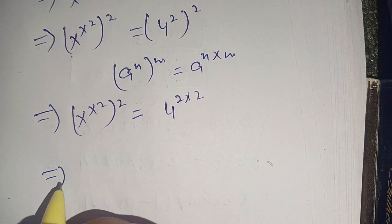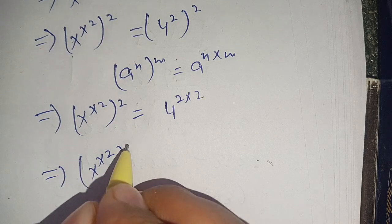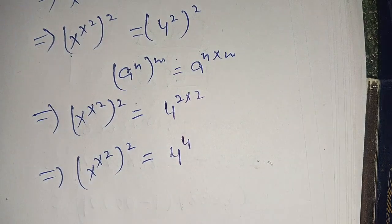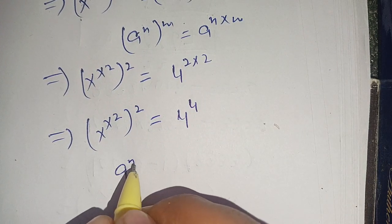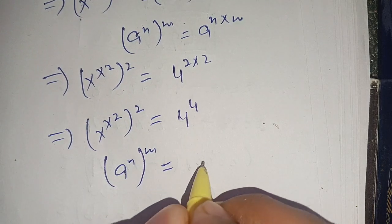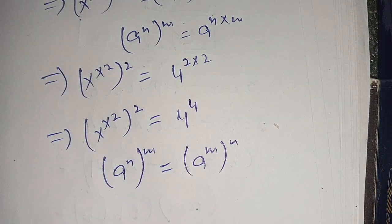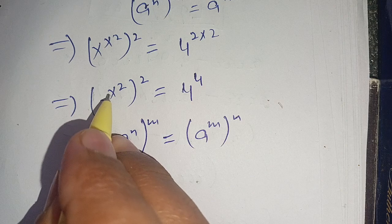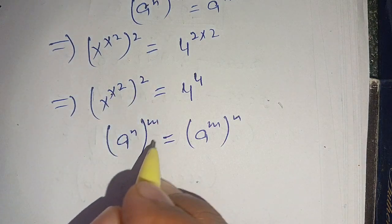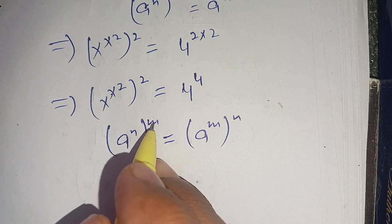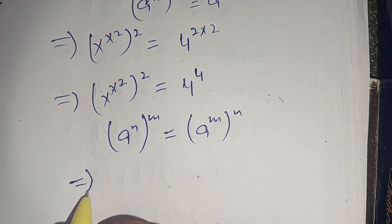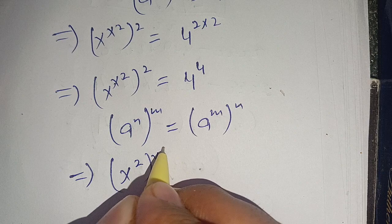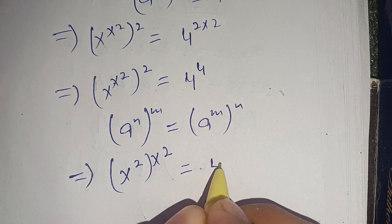So we have (x^(x²))² = 4^4. We also know that (a^n)^m = (a^m)^n. Applying this identity on the left-hand side, where n = x² and m = 2, we exchange n and m. This gives us (x^(x²))^(x²) = 4^4.